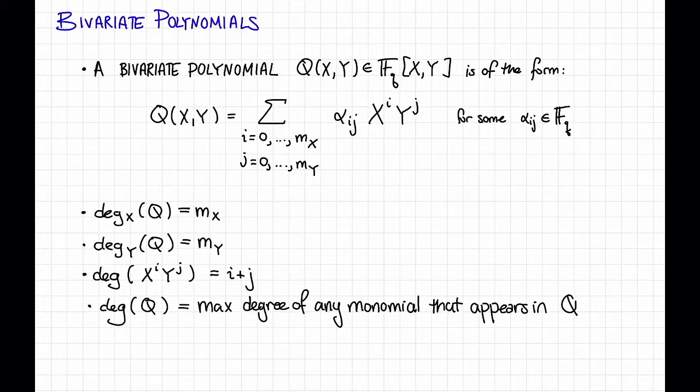A bivariate polynomial Q(X,Y) over the field F_q is a polynomial in two variables X and Y. We use the notation F_q[X,Y] to denote the set of all such bivariate polynomials over F_q. These are polynomials of the form: the sum over i and j of some coefficient α_ij that lives in F_q, times the monomial X^i Y^j.